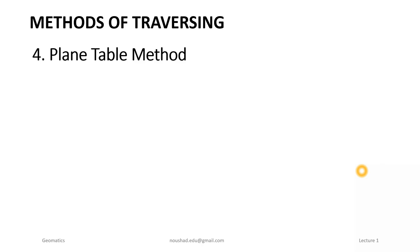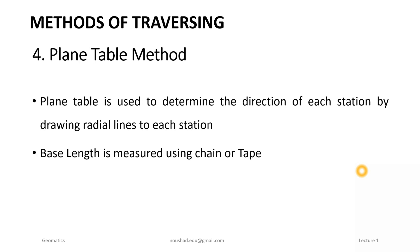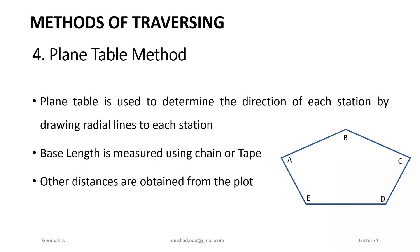The fourth method is the Plane Table Method, where we use the plane table at each station to get the direction by drawing radial lines toward other stations. The chain or tape is then used to measure the length of each line. For example, at point A, the plane table is set up and lines toward other stations B, C, D are drawn; then at B, the other lines are measured similarly.